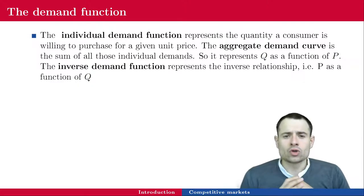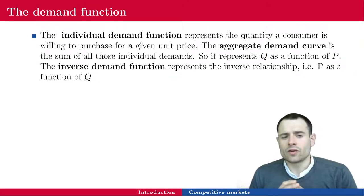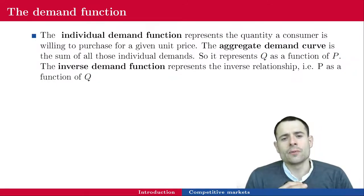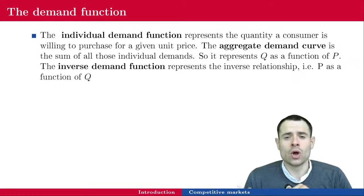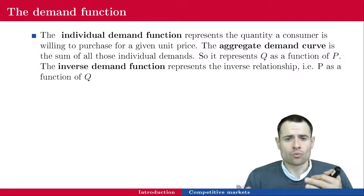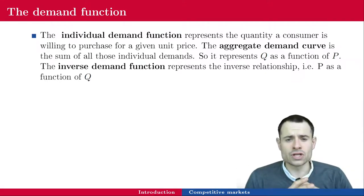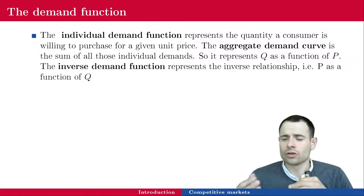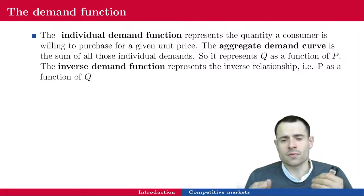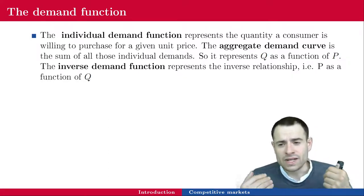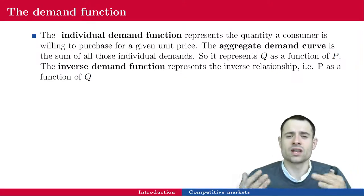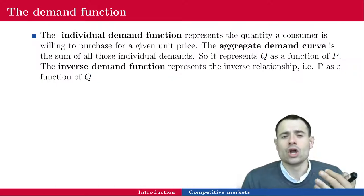If you remember your Econ 201 knowledge, the individual demand function is the function you obtain after maximizing a consumer's utility subject to a budget constraint and some prices. Prices are given. Imagine you are going to Tim Hortons or Starbucks to buy a coffee. The price is what it is; you have a certain amount of money in your pocket. What are you going to order? How many teas, what size, donuts, muffins, and so on — such that it maximizes your utility and stays within your budget.